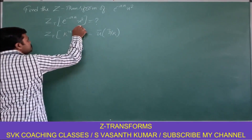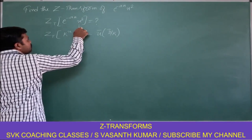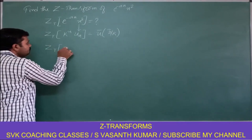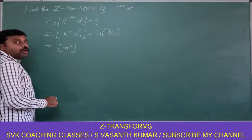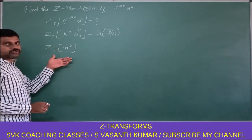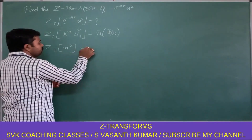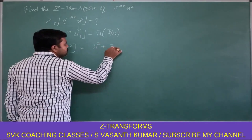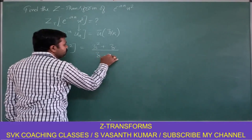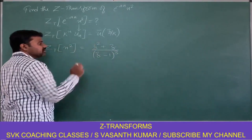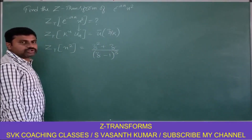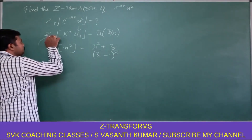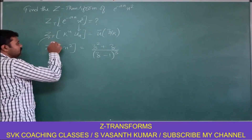Now comparing the problem: in place of u(n) I have n square, so I want to find the Z-transform of n square. According to the list of Z-transforms, Z{n²} = (Z² + Z) / (Z − 1)³.